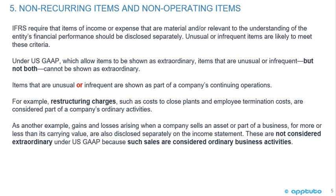As another example, gains and losses arising when a company sells an asset or part of a business for more or less than its carrying value are also disclosed separately on the income statement. These are not considered extraordinary items under U.S. GAAP, but such sales are considered ordinary business activities.